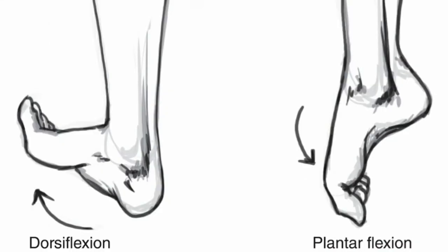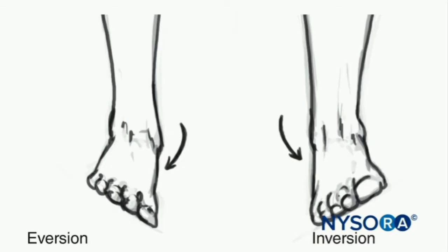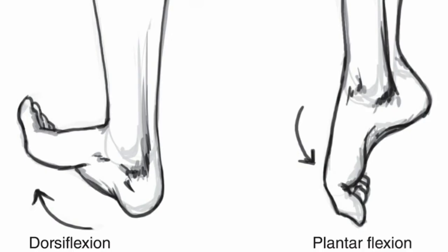There are two types of motor responses that can be elicited with sciatic nerve stimulation at the level of the popliteal fossa. Common peroneal nerve stimulation results in dorsiflexion and eversion of the foot, whereas stimulation of the tibial nerve results in plantar flexion and inversion.